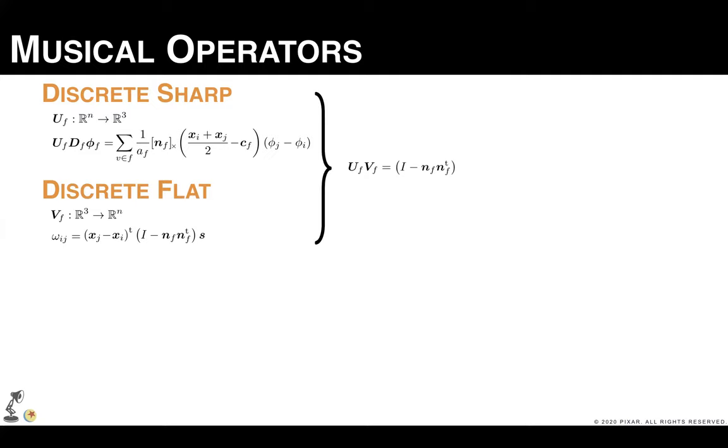Notice that in one direction, our discrete musical operators don't lose any information. In fact, starting from a tangent vector, if we apply flat and then sharp, we get back the same input vector. So the mismatch shows up when we revert the order of these operations.